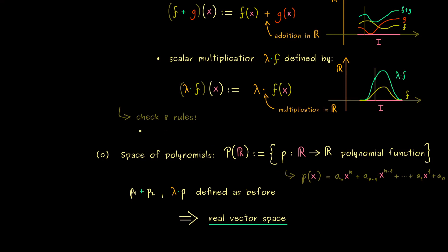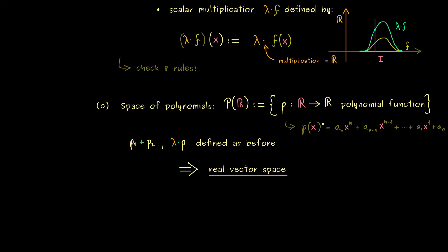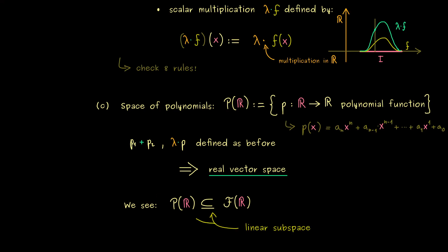Now we have seen a very important fact: P(R) is a subset of F(R). This is simply given by the definition of the sets. However, this subset relation is not all we have — since the vector space operations are exactly the same, we have a relation for vector spaces. This is exactly what we call a subspace. More precisely, P(R) is a linear subspace in F(R): a well-defined vector space inside another bigger vector space.